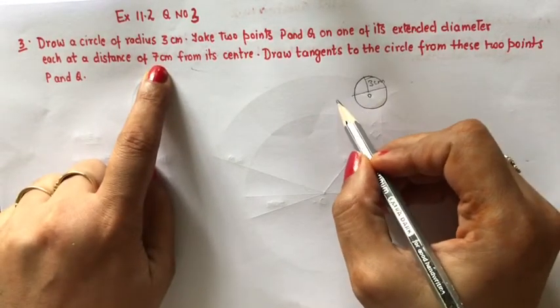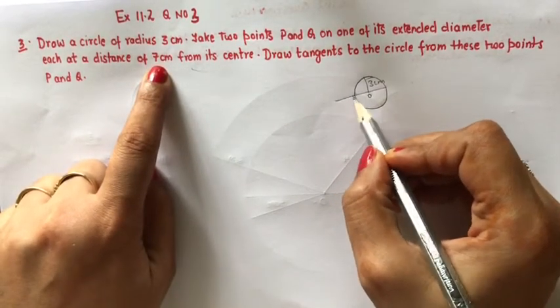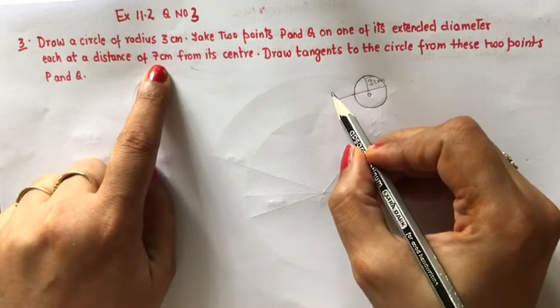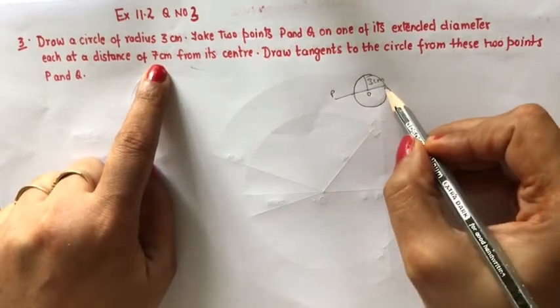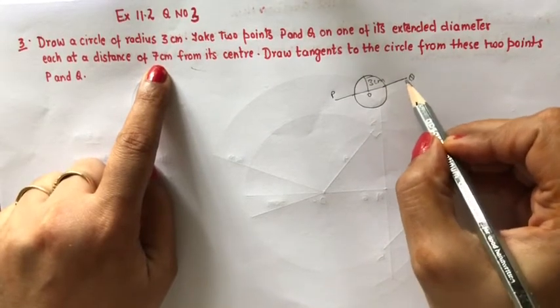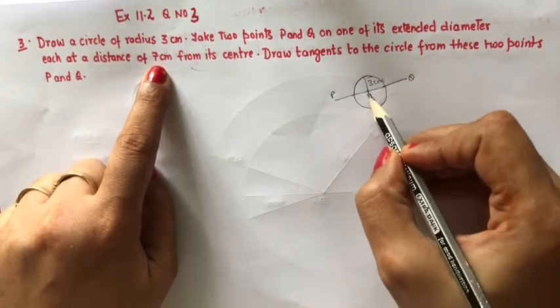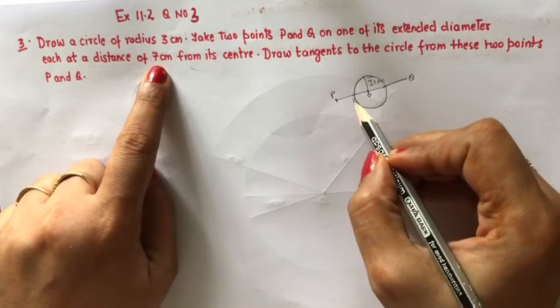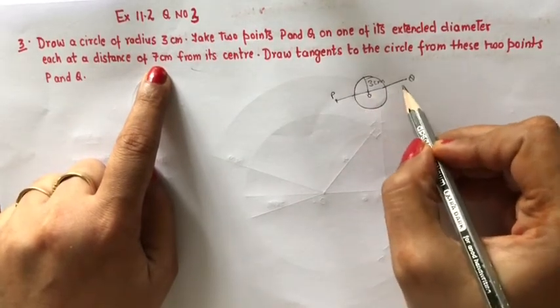So 3 it is already there. So we will make 4 cm more. So this will become 7 cm. This point will call P and another Q. So P and Q will be on the extended diameter and this distance OP will be 7 cm, right?